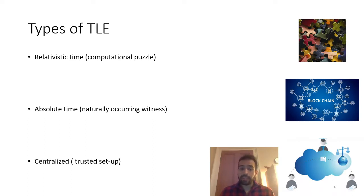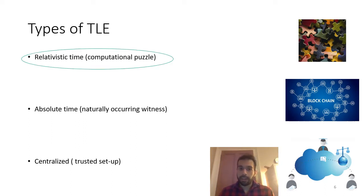Finally, we have centralized time-lock encryption schemes where a centralized authority releases time tokens which act as a secret key for decrypting messages at specific times. Astrolabos, the construction we provide in this work, is a relativistic time construction based on a computational puzzle and specifically based on a hash function, that realizes our ideal functionality. Despite the fact that Astrolabos is a relativistic time scheme, our ideal functionality captures all three types of time-lock encryption.